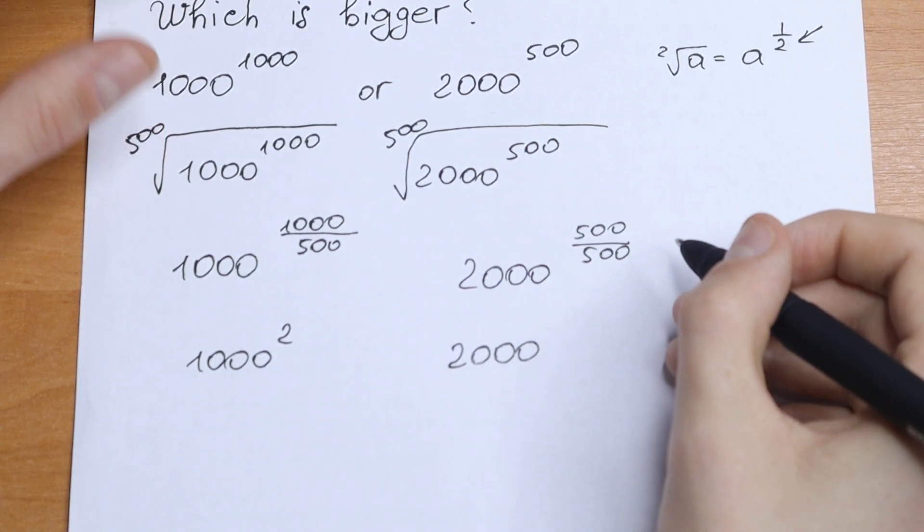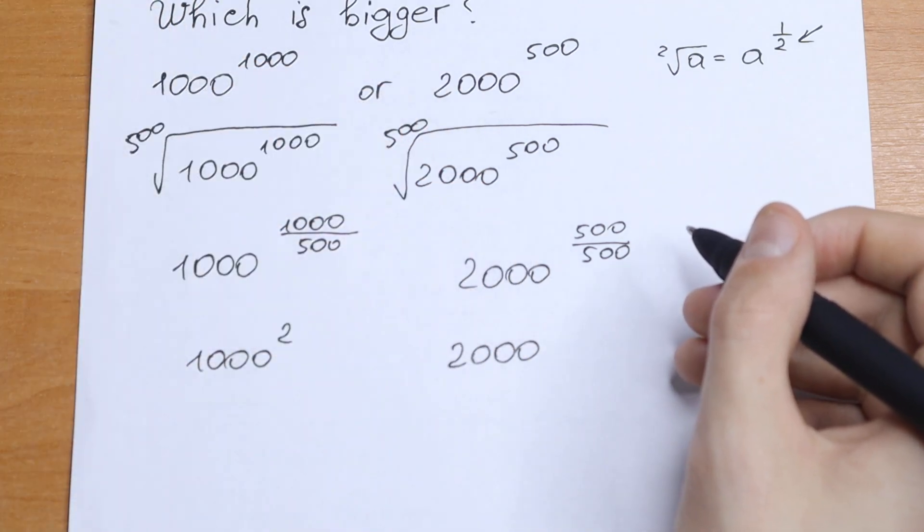500 divided by 500 will be 1, and of course 2000 still right here. OK.